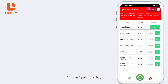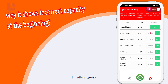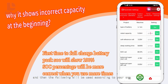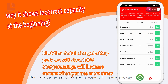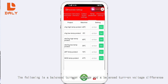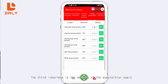Only after setting the capacity here will the real-time remaining power percentage be accurate. The following settings include sleep waiting time and a manually set SOC power ratio. Also, why is the battery display inaccurate when first installed? When you are fully charged for the first time, the protection board will automatically calibrate to 100% power. After that, the remaining power percentage will become accurate. The following settings are balanced turn-on voltage and balanced turn-on voltage difference.